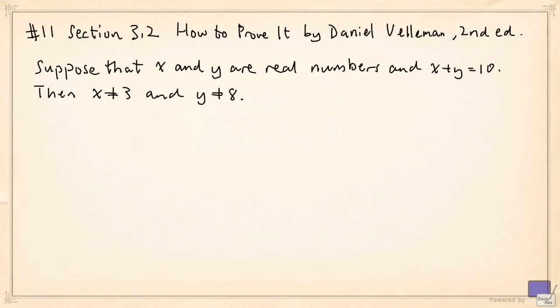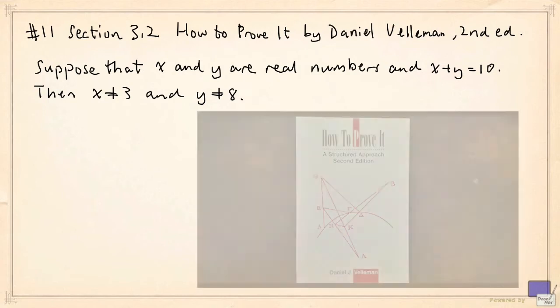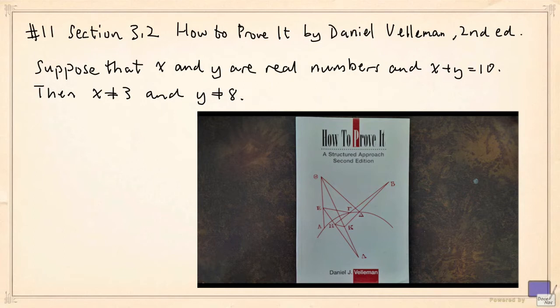We're going to look at an example of a false proof. This is taken from exercise number 11 in section 3.2 of the second edition of How to Prove It by Daniel Vellman.